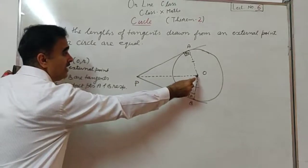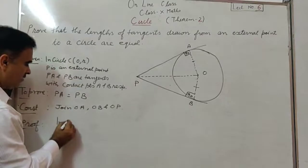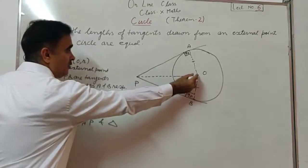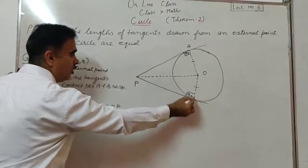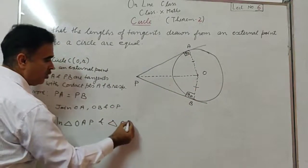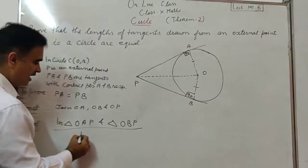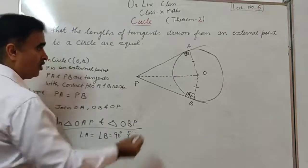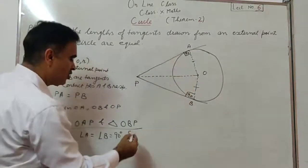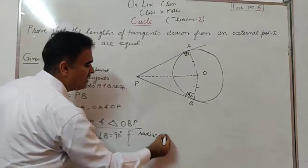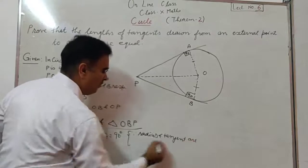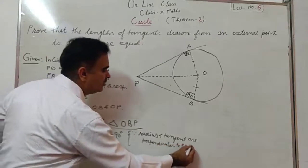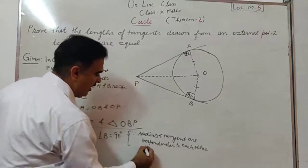We take triangle OAP and triangle OBP. Angle A equals angle B equals 90 degrees. Why? Because this is the radius and this is the tangent — radius and tangent are perpendicular to each other at the contact point. OP equals OP, which is common. OA equals OB because they are radii of the same circle.